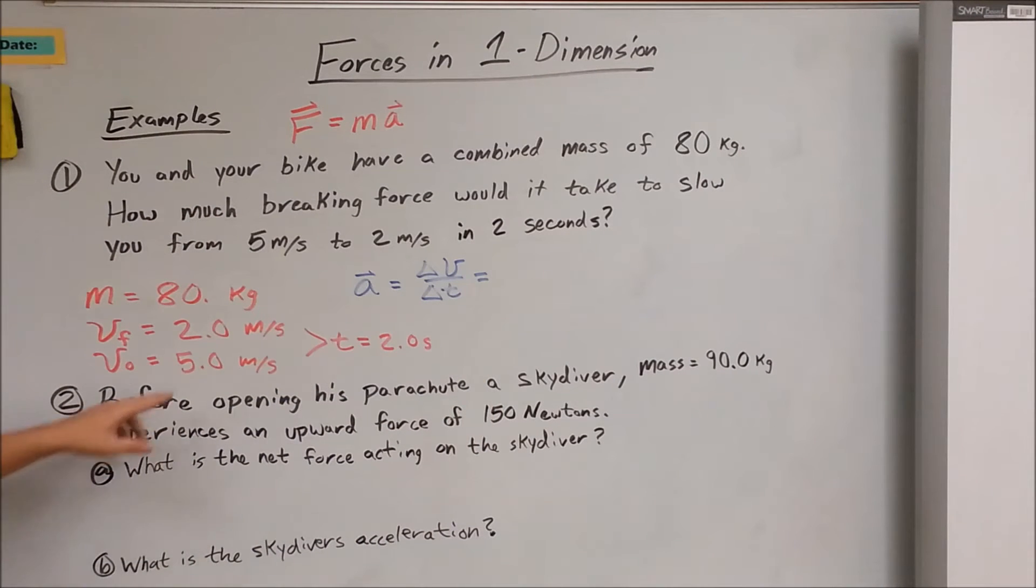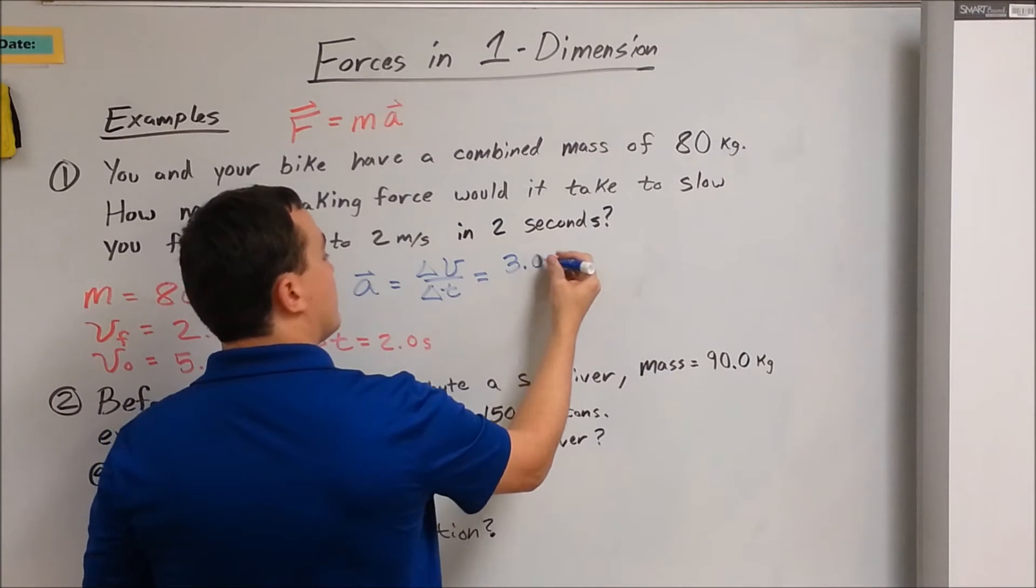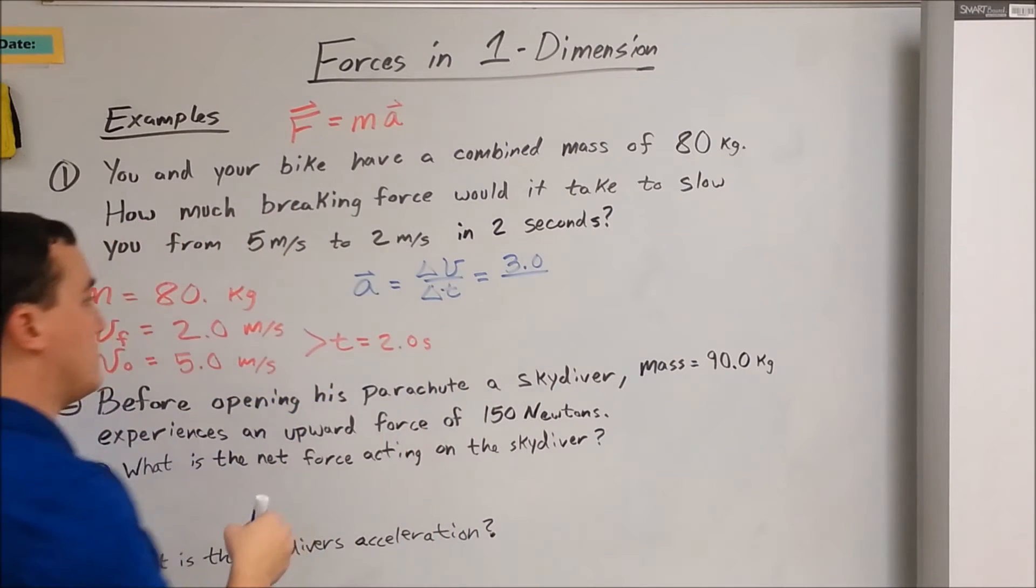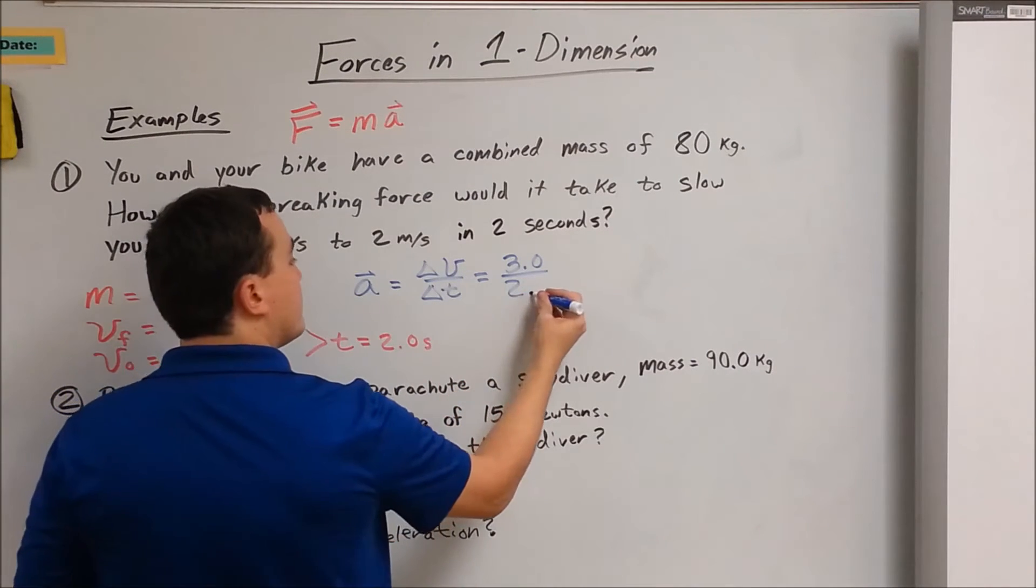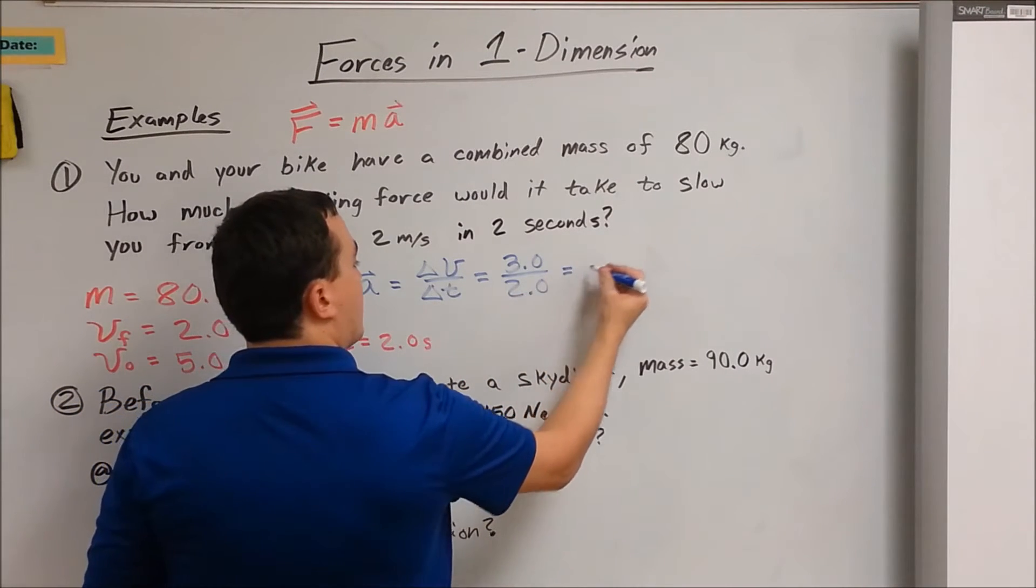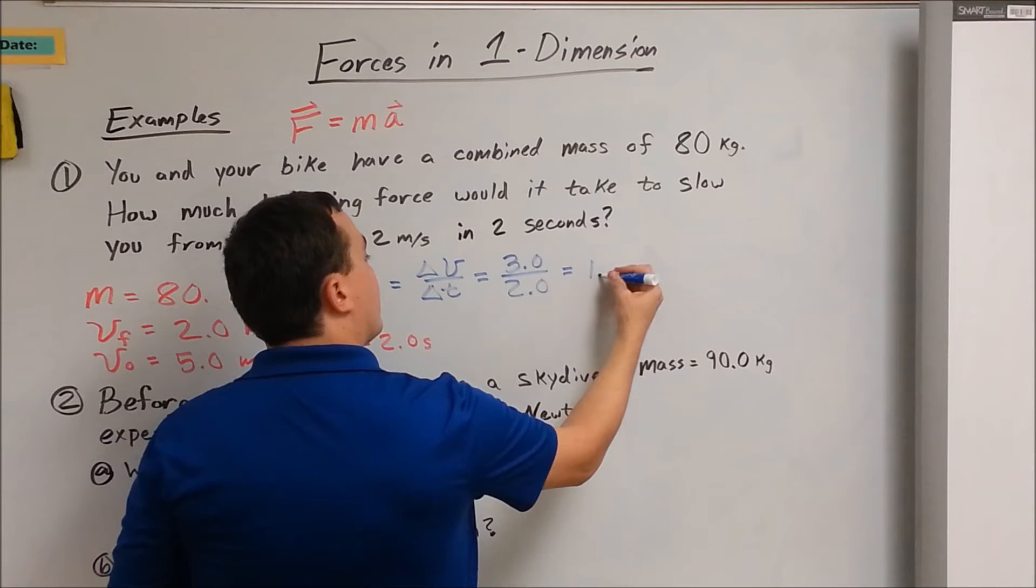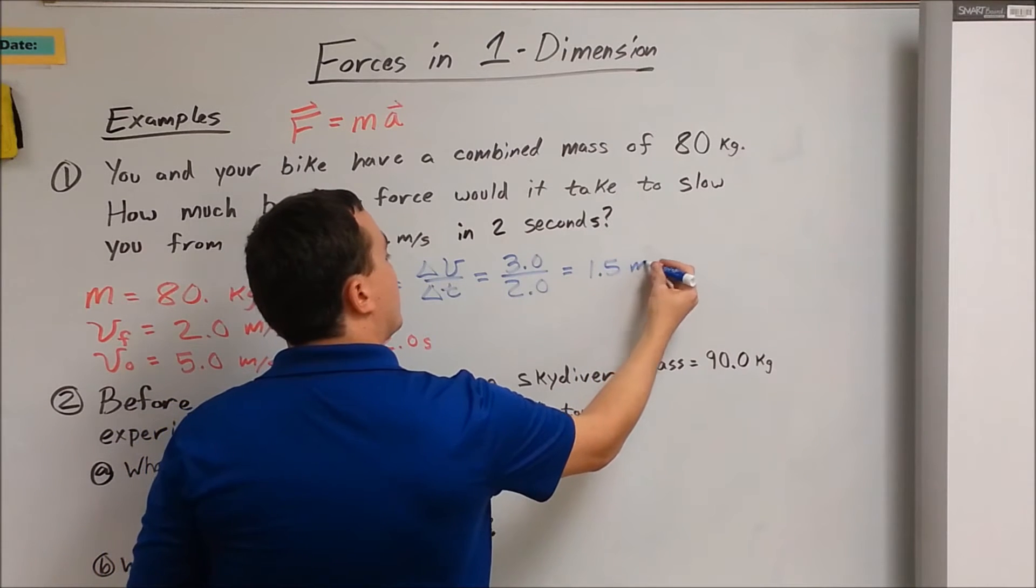So our acceleration is 5 minus 2, which is 3, divided by 2 seconds. So our acceleration is 1.5 meters per second squared.